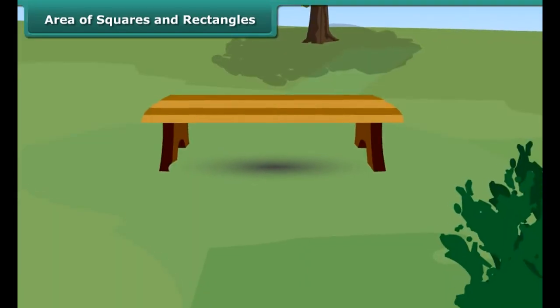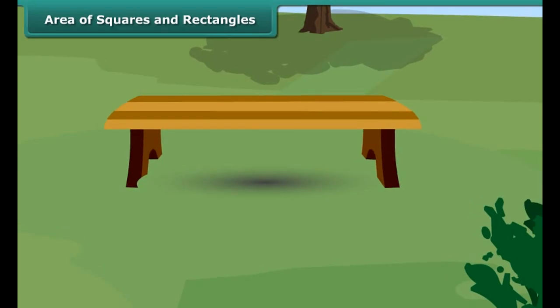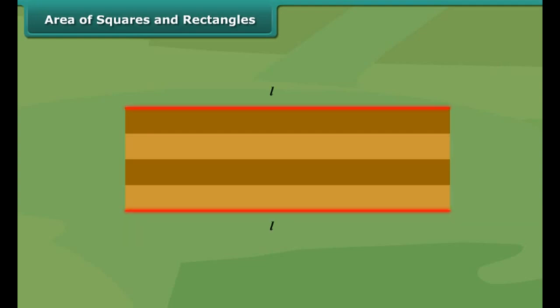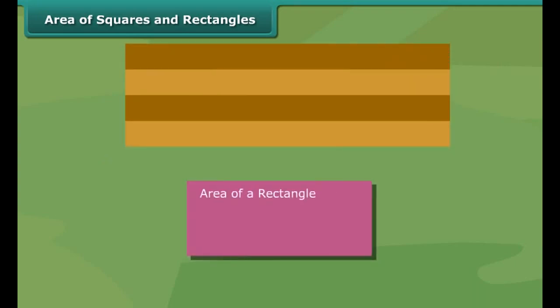You have noticed the shape of the bench in the park. It is in the shape of a rectangle on the sitting top portion. Can you find the area of the top bench? Yes. If you have measures of length and breadth of the rectangle, we can find the area. The area of a rectangle is the product of its length and breadth.